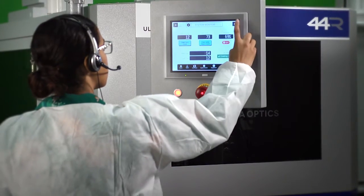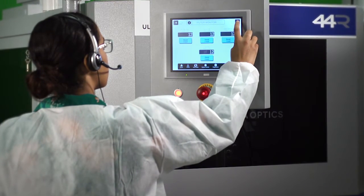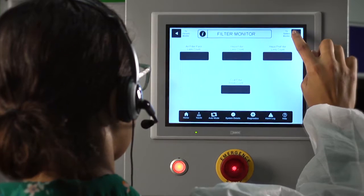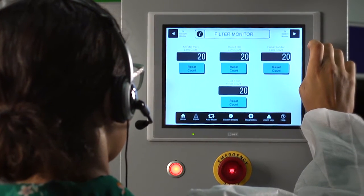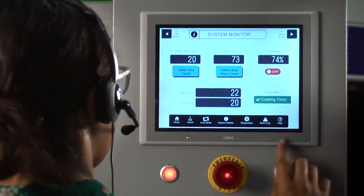The 44R features a fully integrated touchpad that's easy to read and navigate, providing access to machine diagnostics and troubleshooting, including UV intensity monitors, vacuum settings, and lens counts. The 44R has it all.